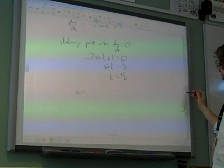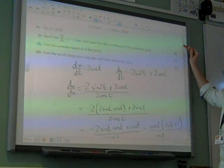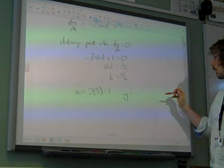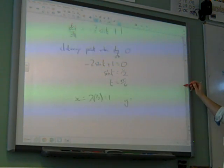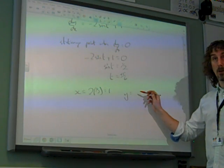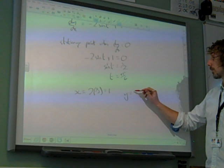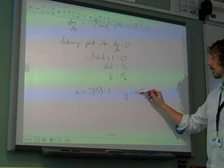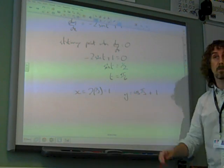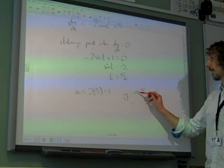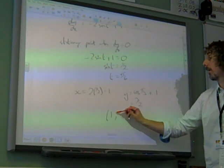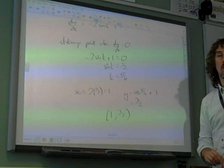And so, if we sub that in, x equals 2sine(t), so 2 times 1 half, which is 1. And y equals cos(2t) plus 2sine(t). So cos(2t) is cos(pi/3), plus the 1, that was the 2sine(2t). That's a half, plus 1 is 3 over 2. So the coordinate is the point (1, 3/2).